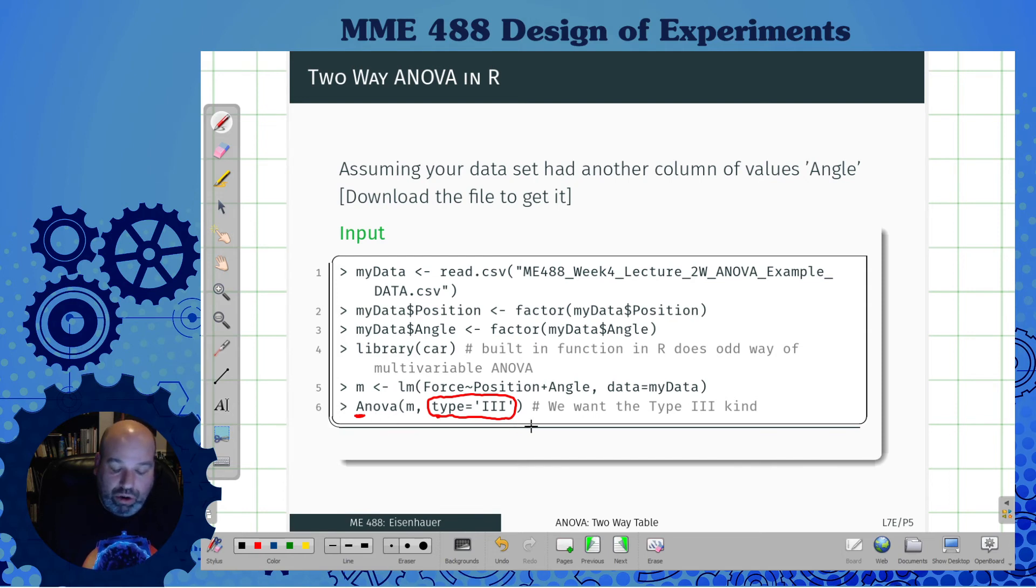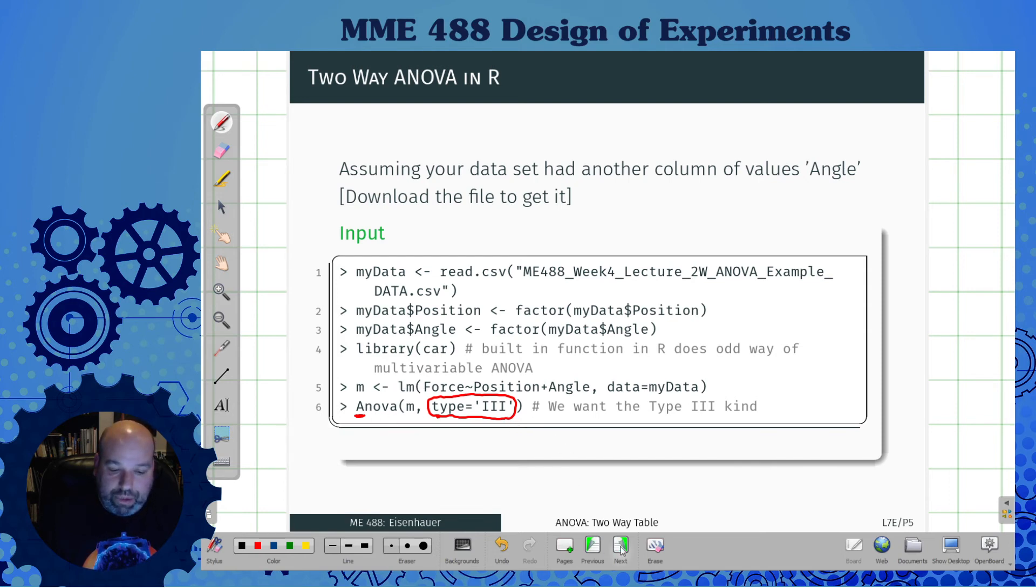So again, it's just a wrapper. It's a special one that you have to do when you go above one way. And your results get pretty much similar, except for this time you actually get the full residual type idea, but the same idea happens. You get a position and angle and residuals, you get your F values that you're looking for, and you have some evidence that factors matter.